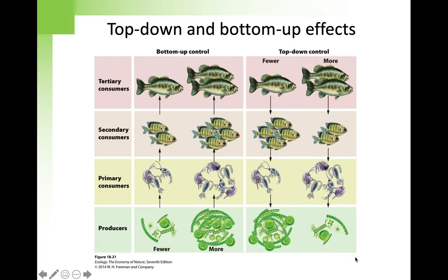From jungle to desert, from forest to plain, from mountaintops to the seashore, the earth is home to many habitats. Every habitat contains a community of plants and animals. Each community is populated by different species, and each species is present in different numbers.